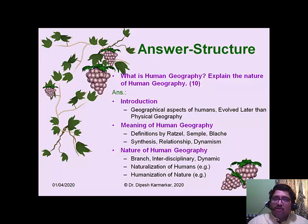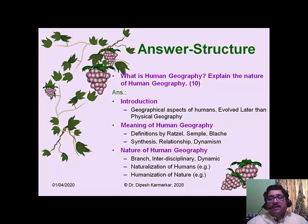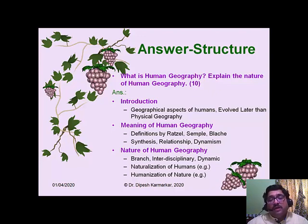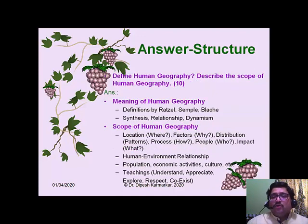For a 10-mark question your answer should be about three pages. Give appropriate weightage: introduction gets about 1 mark, while the remaining 9 marks are distributed between meaning and nature. Nature of human geography should get about 50% weightage in your answer, while introduction and meaning together can share the other 50%. For the scope question, meaning itself becomes the introduction, so discuss definitions and qualities but mainly highlight the scope.